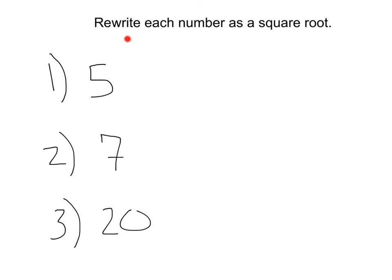Let's go ahead and rewrite each of these numbers as a square root. Here we have the value of 5. Well, if I wanted to write 5 as a square root, I would get the square root of 25, right? If I take the square root of 25, that's 5, which is the same as what we wanted.